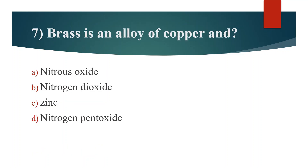Seventh question. Brass is an alloy of copper and. Option A: Nitrous Oxide. Option B: Nitrogen Dioxide. Option C: Zinc. Option D: Nitrogen Pentoxide. Answer is Option C: Zinc.